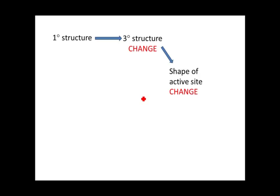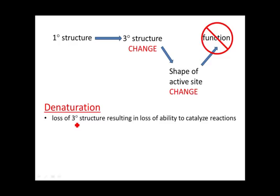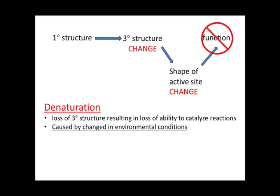Denaturation is different from a mutation. A mutation, like in sickle cell disease, involves a change starting in the primary structure resulting in a different protein shape. Denaturation is just the loss of three-dimensional structure — caused by a change in environmental conditions — resulting in the loss of ability to catalyze reactions. The primary structure hasn't changed; it's not a mutation. The conditions under which the enzyme is working have simply changed away from what it's used to.